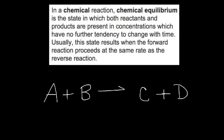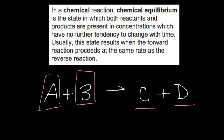You have your reactant A and reactant B. They react together to form product C and product D. Eventually, A and B will all react to the point where we have nothing but C and D. So when that happens, we usually say the reaction has stopped.